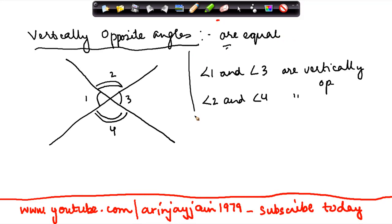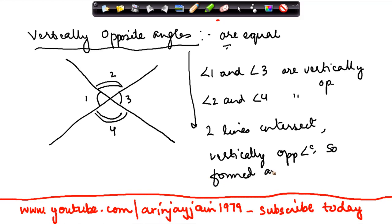I mean, whenever two lines intersect, vertically opposite angles so formed are equal, which means that in our example, angle 1 and angle 3, and angle 2 and angle 4, both these pairs of angles are equal to each other.